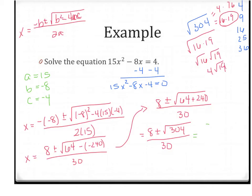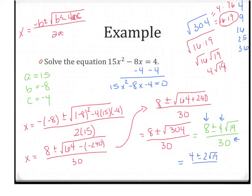Coming back to the problem, we have 8 plus or minus 4 square root of 19, all over 30. You can't reduce a number under a square root with a number that's not. But I can look at the numbers that aren't under the radical: the 8, the 4, and the 30. Do they all reduce by the same number? They all reduce by 2. So we're going to have 4 plus or minus 2 square root of 19, all over 30 — wait, that's your answer divided through. Reducing all three by 2 gives 4 plus or minus 2 square root of 19, all over 15, and you're going to leave it exactly like that because there's a square root in there.